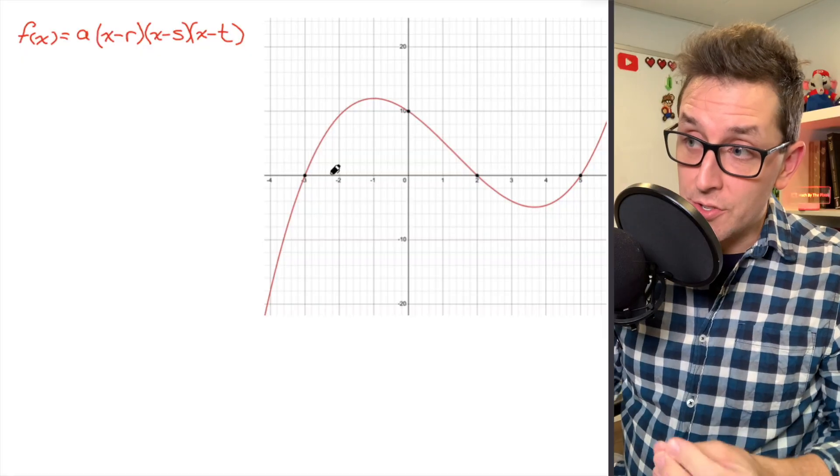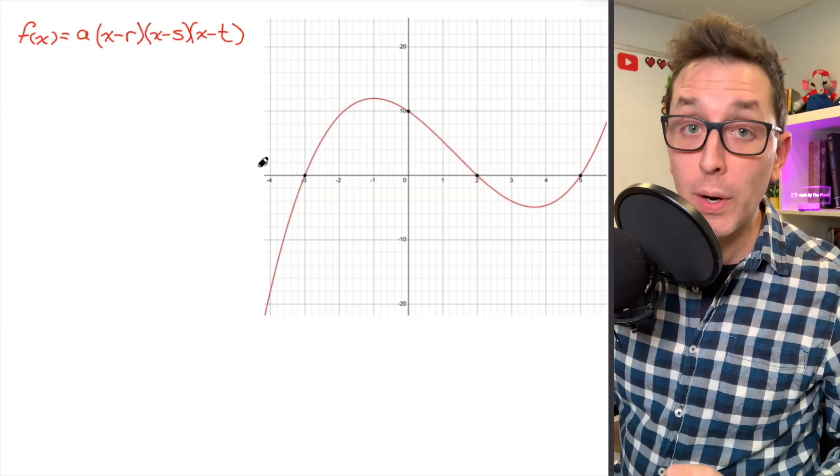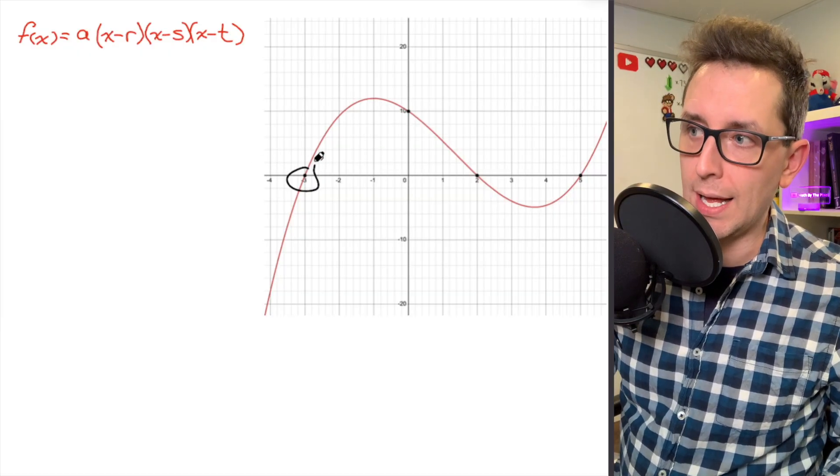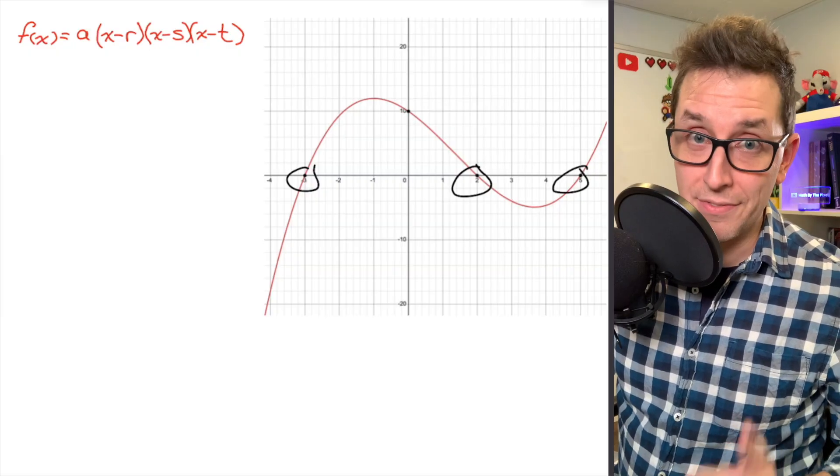As I said, the x-intercepts are going to be key here when it comes to writing this polynomial equation. So let's start by pointing out what those x-intercepts are. We can see here that the first x-intercept is located at negative 3. We have an x-intercept located at 2, and we also have one located at 5.